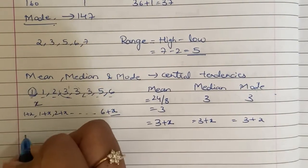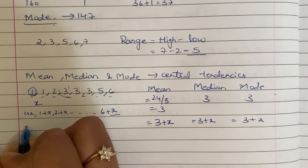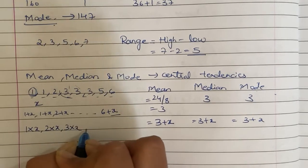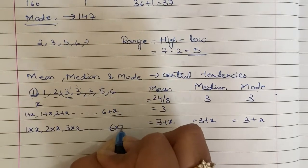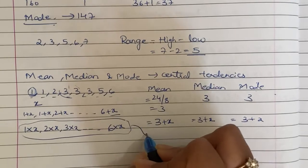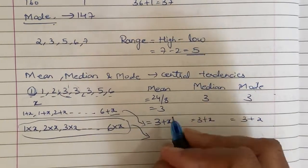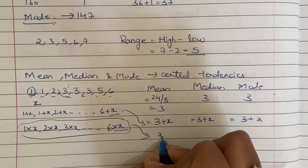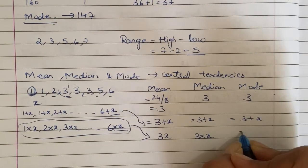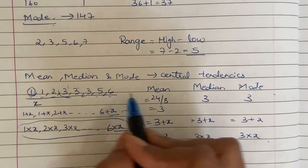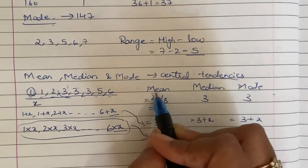Similarly, in this case, we will multiply: 1 into x, 2 into x, 3 into x, and 6 into x. Now in this case, mean is equal to 3x, median is equal to 3x, and mode is equal to 3x. So this number is shifted. This central tendency value is shifted.